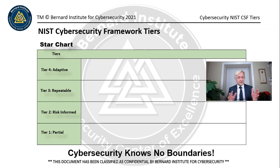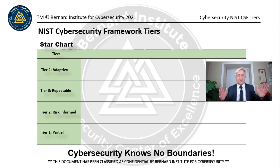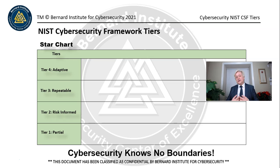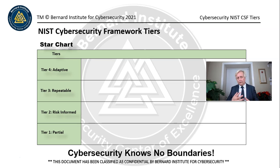Risk-informed is about conducting risk assessments and presenting the risk to the governance committee. Repeatable means that you actually have a documented process, you're following that process, and it's being audited to make sure the process is being followed. Adaptive means that your risk management process is constantly being improved — that's part of quality management and continual improvement.